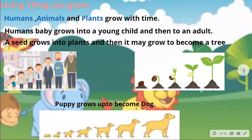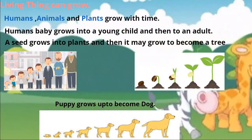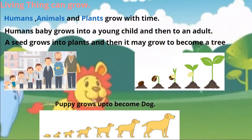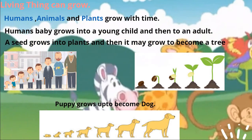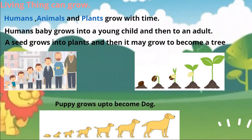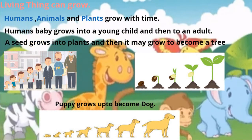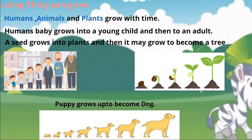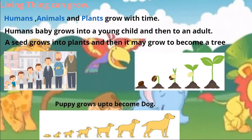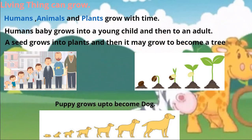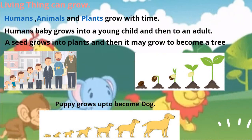Living things can grow. Humans, animals and plants grow with time. A human baby grows into a young child and then to an adult. A seed grows into a plant and may then grow to become a tree. A puppy grows up to become a dog.